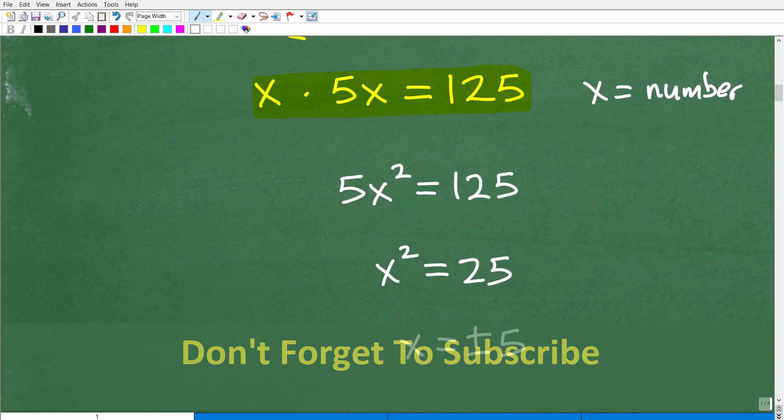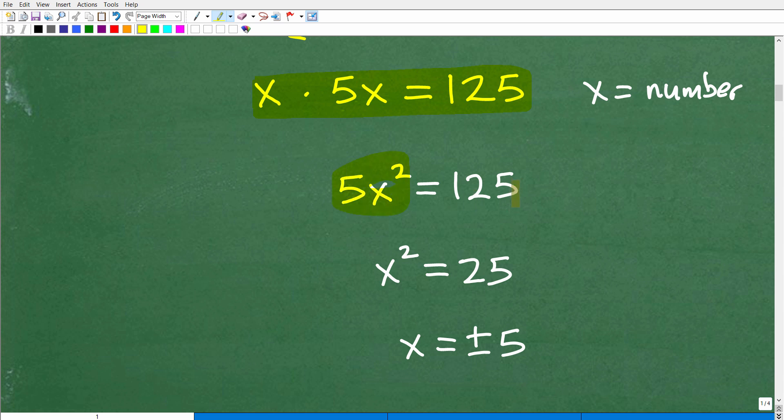All right. So we have X times five X is five X squared is equal to 125. Now, at this point, some of you may not have studied yet quadratic equations. Okay. So quadratic equations is what we have going on here.